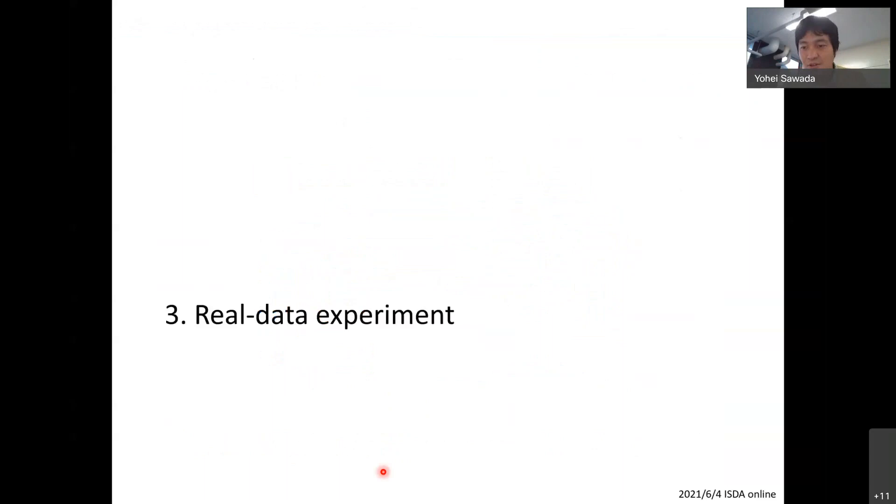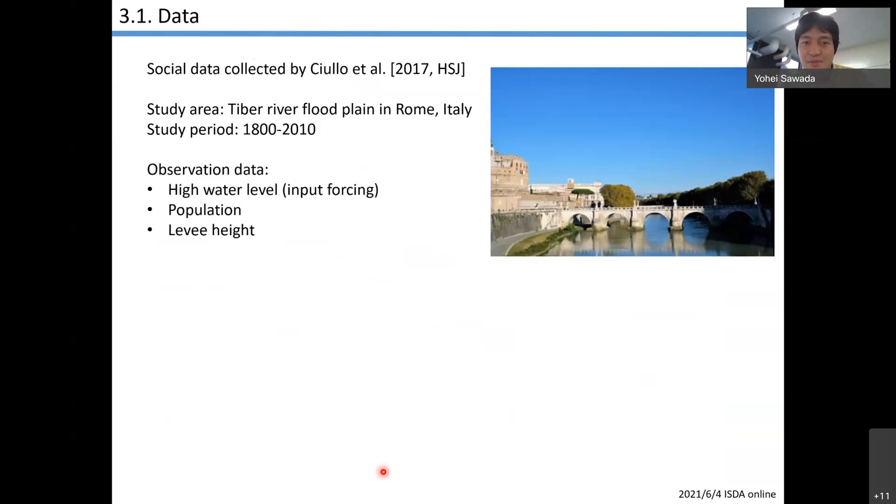First, I'm going to explain the real data experiment to clarify how data assimilation works in this model, and then I'm going to move on to idealized experiments to deepen the understanding of how it works. My study area is Tiber River flood plain in Rome, Italy. It looks beautiful. I really want to go after beating this pandemic. I have three observation data: high water level, this is the input data, input forcing; population data; and levee height as the observation for assimilation.